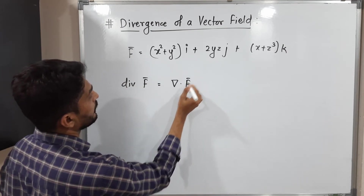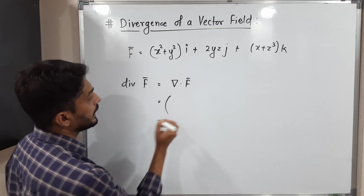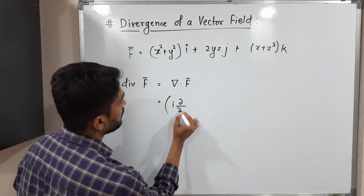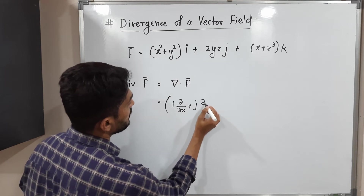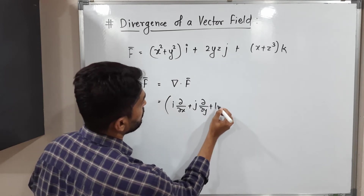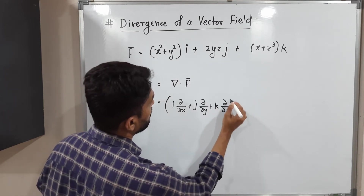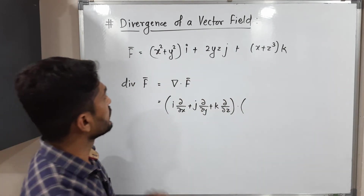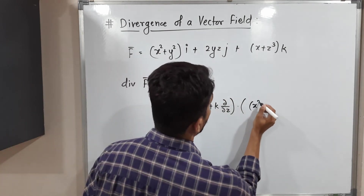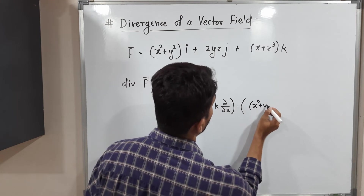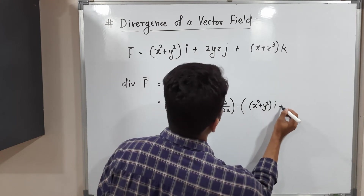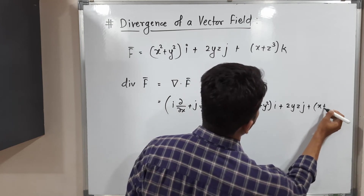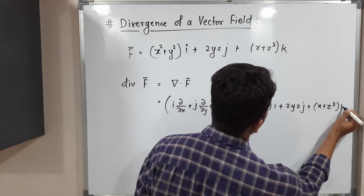Del is: i(∂/∂x) + j(∂/∂y) + k(∂/∂z). Our F̄ = (x² + y²)i + 2yz·j + xz³·k. We take the dot product of ∇ with F̄.